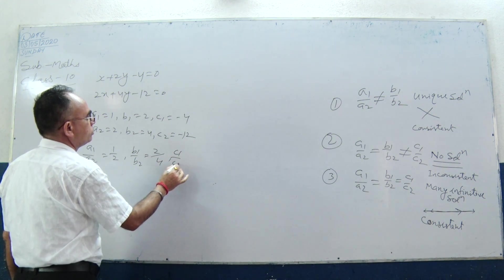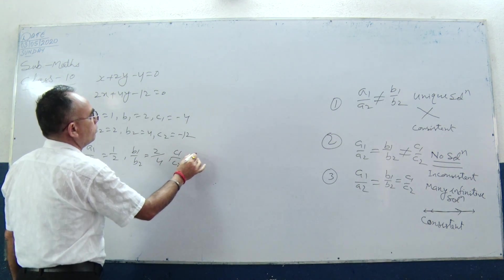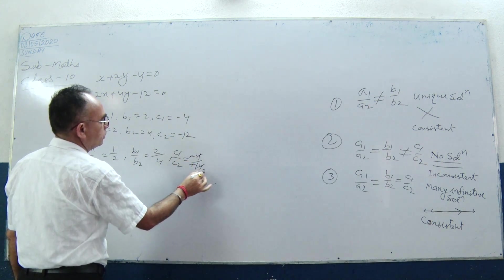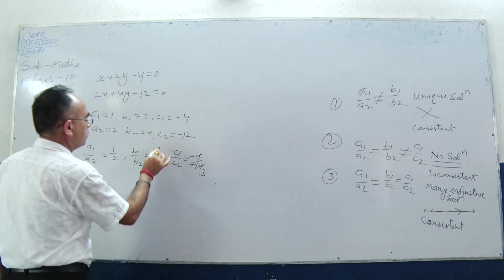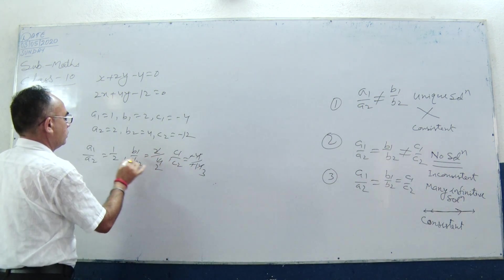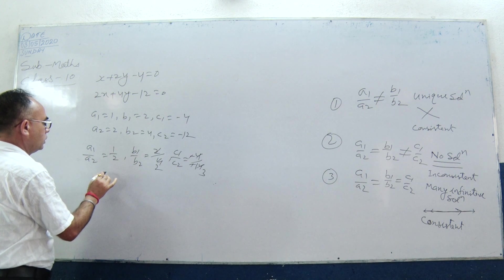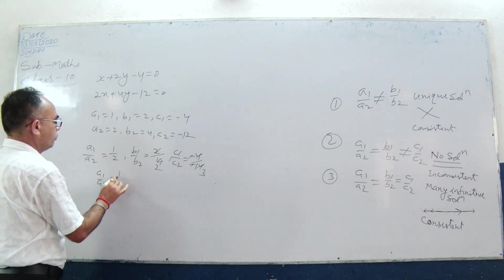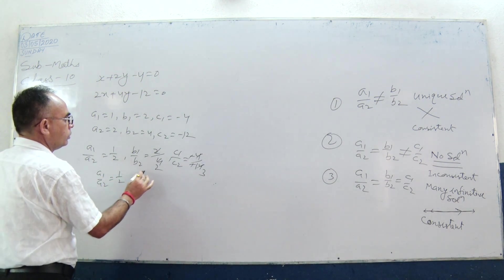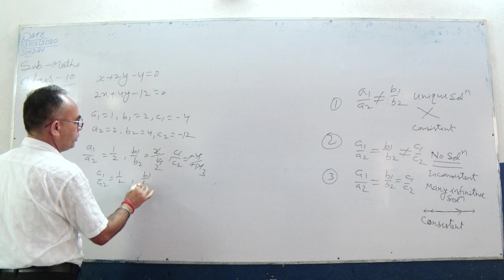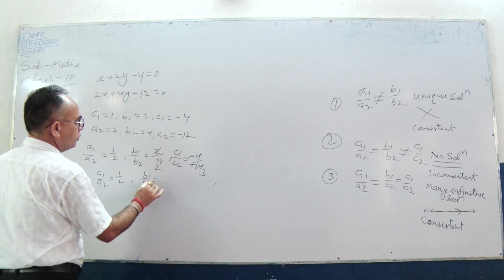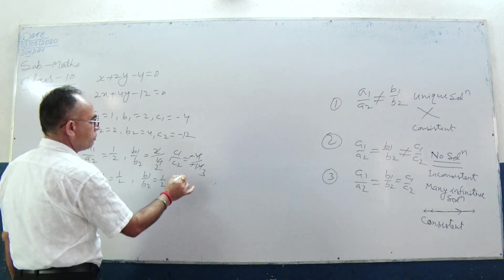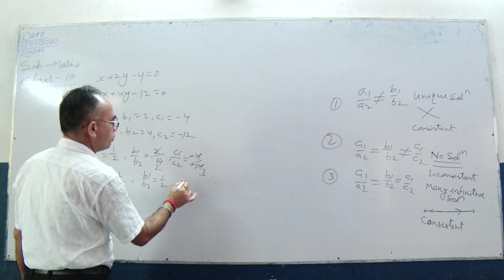And C1 by C2 is negative 4 by negative 12. A1 by A2 equals 1 by 2, B1 by B2 equals 2 by 4 — both are equal — but C1 by C2 is not equal.